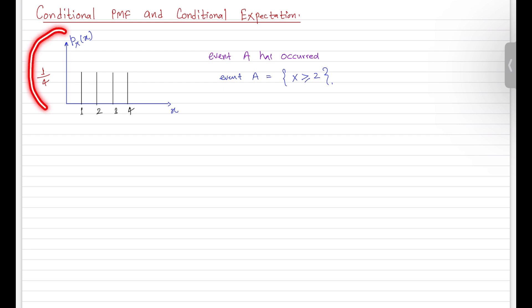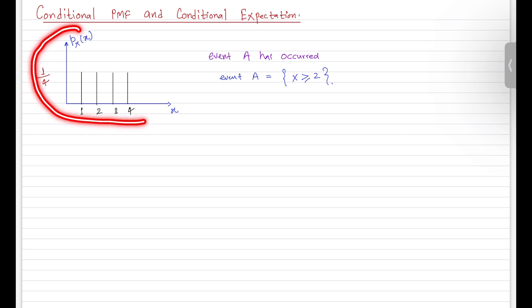So you have some prior belief, or you can say you have some prior probability mass function. Now I am saying that event A has occurred. If I ask you what the revised PMF will be — given that event A has occurred — then random variable X will take the value 2, or maybe 3, or maybe 4.